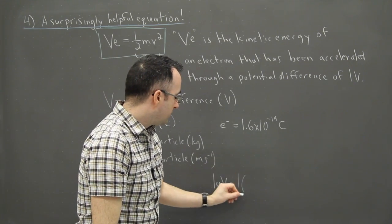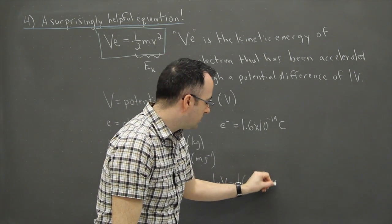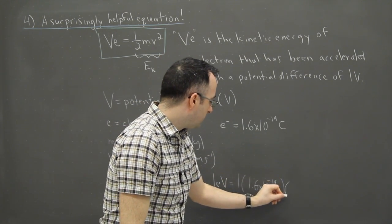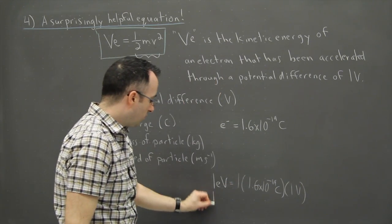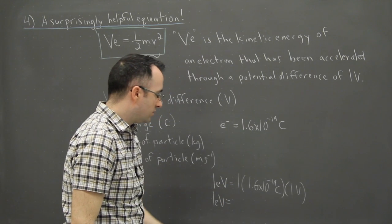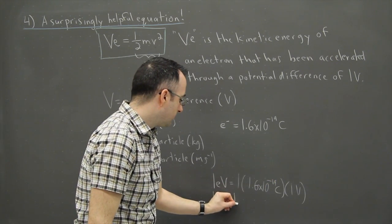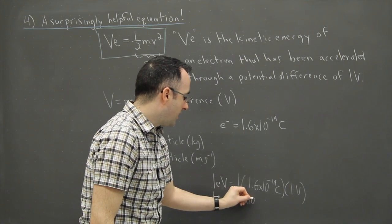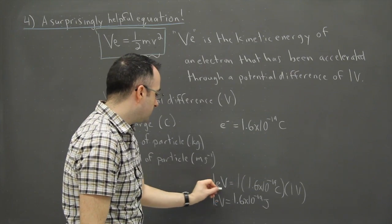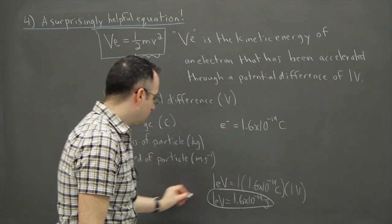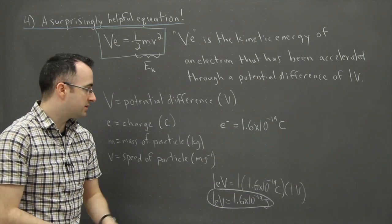So 1 eV then is just, well, it's 1 times the charge of an electron. So 1.6 times 10 to the minus 19 coulombs times 1 volt. That's what 1 eV is. In other words, 1 eV, if you want to convert that to joules, it's real easy. It's just 1.6 times 10 to the minus 19 joules. That is very handy because it turns out a coulomb volt is also the same thing as a joule. So this sort of explains where this weird unit of energy, electron volts, comes from.